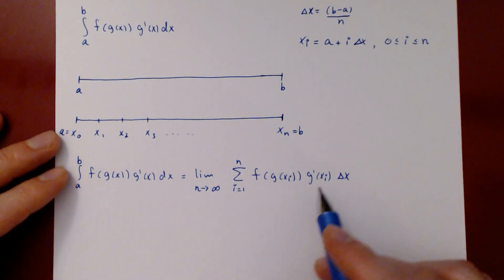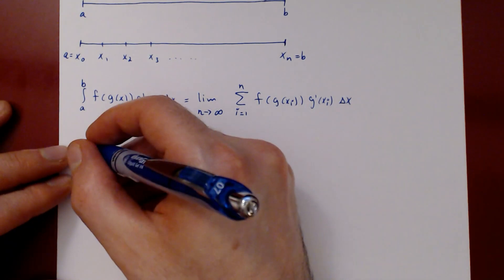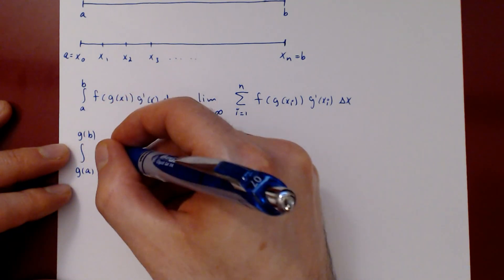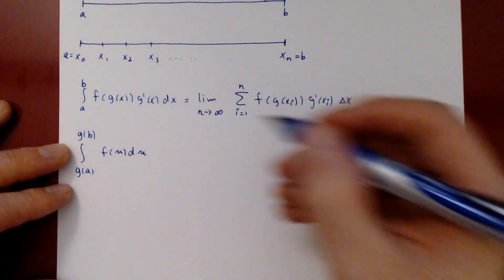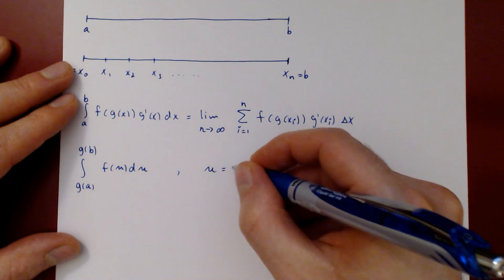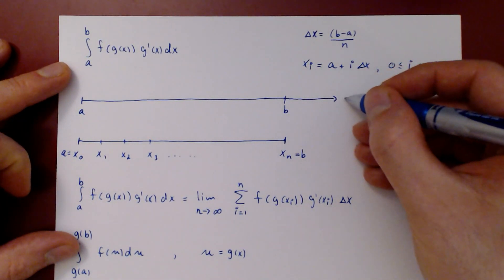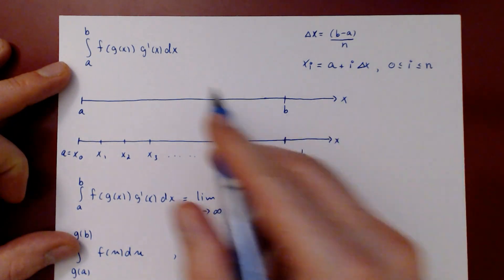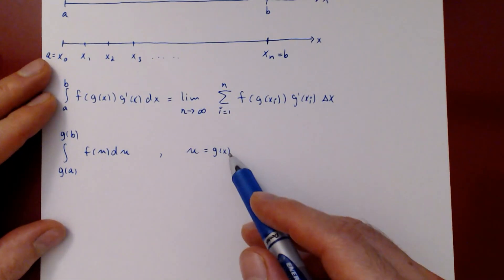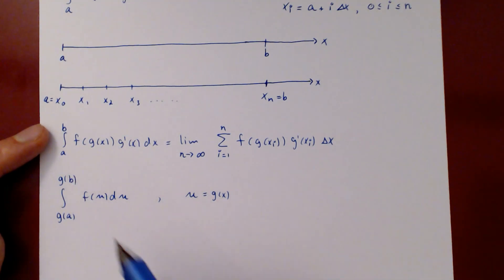Now we consider the limit of the Riemann sum for the new integral. Recall this integral was the integral from g(a) to g(b) of f(u) du, where u = g(x). We transform the original interval: the x-axis is the original variable of integration, but letting u = g(x) gives a new interval from g(a) to g(b).